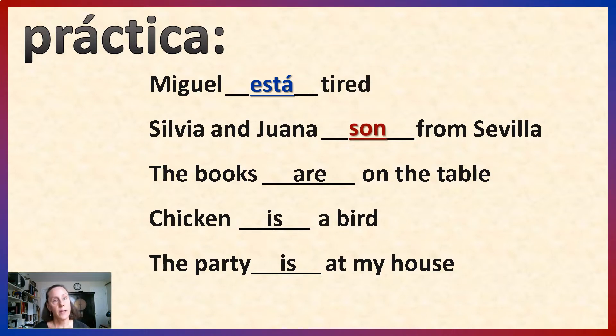The books are on the table. This is where they are. So, estar. Están. Chicken is a bird. This is not where it is, how it is, or a condition. This is inherent characteristic. Therefore, it is ser. Es.